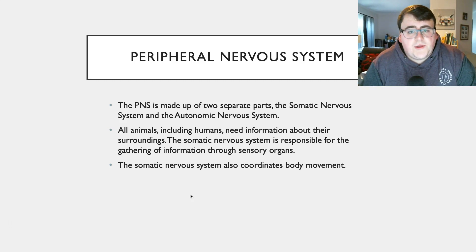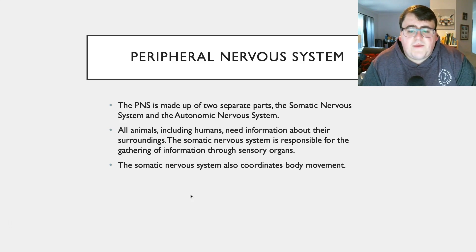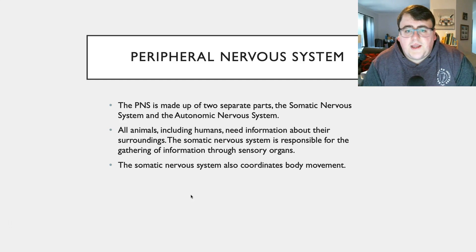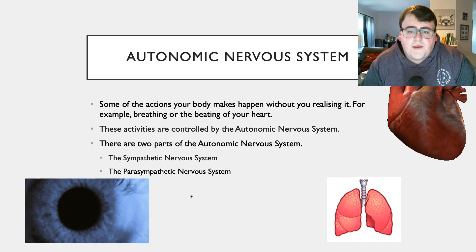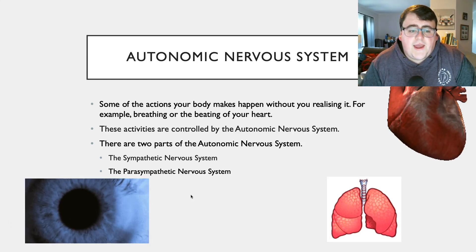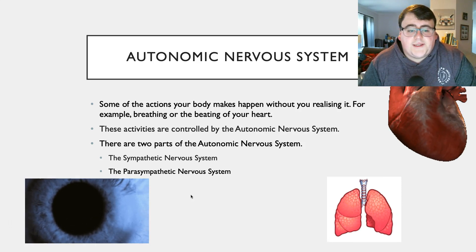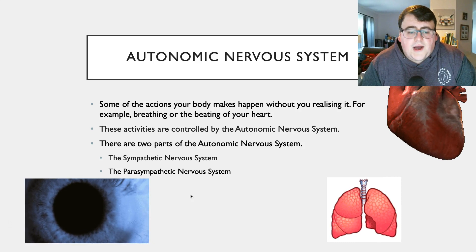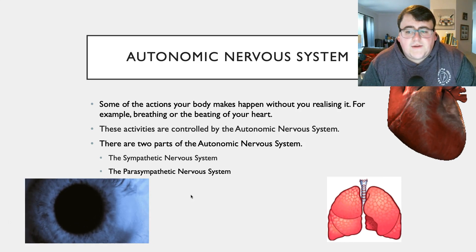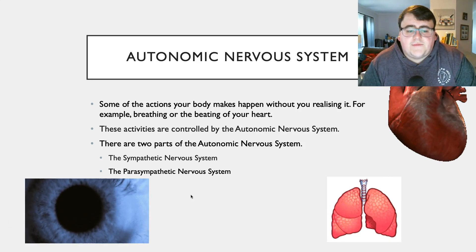All animals including humans need to gather information about their surroundings, and that's what the somatic nervous system does. It gathers information about the environment through your sensory organs, and it's also responsible for coordinating body movement. The autonomic nervous system, on the other hand, is responsible for all the actions that happen in your body without you realizing it — so breathing or your heart beating. These are all actions of the autonomic nervous system.